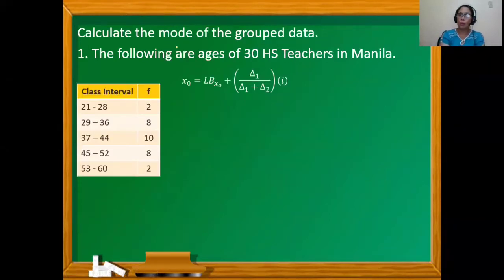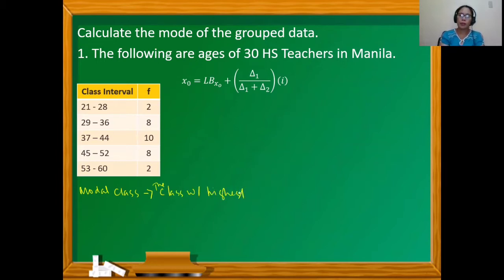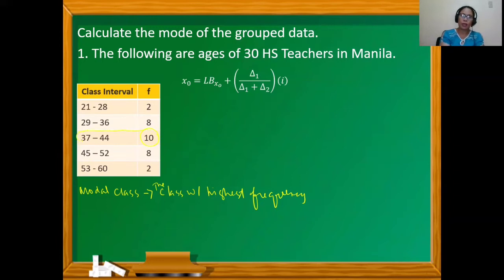Calculate the mode of the grouped data. The following are ages of 30 high school teachers in Manila. First, we need to identify the modal class, which is the class with the highest frequency. By inspection, the third class interval has the highest frequency, so we can say that this is the modal class.